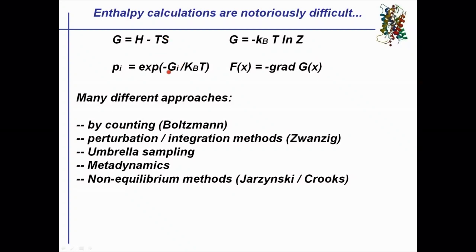What can we do? If we are lucky, we can have a very long unbiased simulation where everything of interest occurs spontaneously — say a ligand binding and unbinding from a protein. We count how frequently it's bound versus unbound, and the Boltzmann relation tells us that the probability of finding a state is directly proportional to its free energy. But this depends on seeing everything spontaneously, and due to the sampling challenge in MD simulations, this Boltzmann formalism is not always applicable.